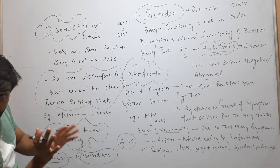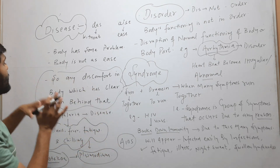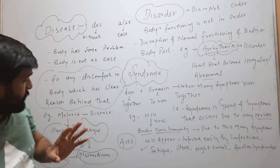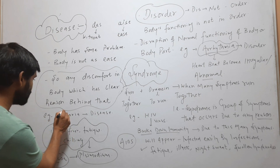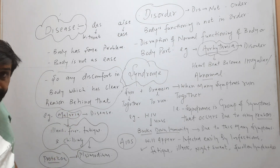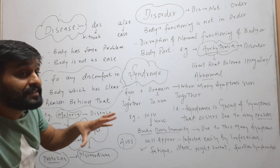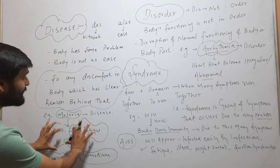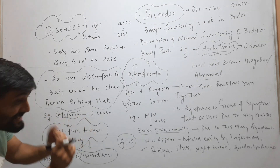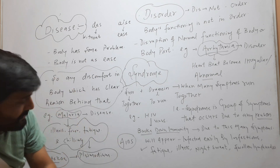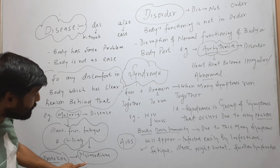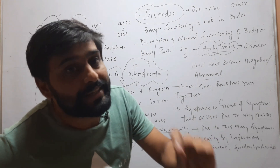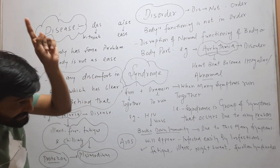Any discomfort or disorder in the body which has a clear reason behind it is called disease. Let's understand this with an example. Take malaria — it is a disease. In malaria there is discomfort in the body: illness, fever, fatigue, and chilling. These discomforts have a reason — the protozoa Plasmodium. When Plasmodium enters the body it causes discomfort, so it is called a disease.